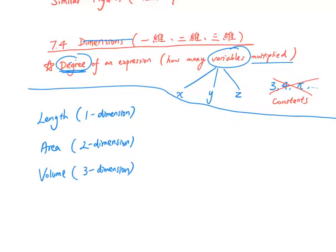So we need to identify three words. The first is length, it is a one-dimensional measurement. For area, it is a two-dimensional measurement, and for volume, it is a three-dimensional measurement.